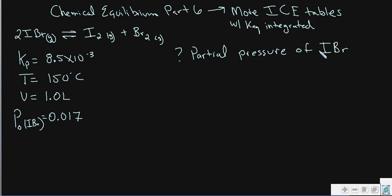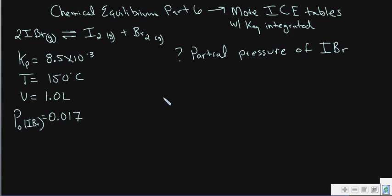To do this you have to use the Kp — the partial pressure equilibrium constant — along with an ICE table, so it gets a little bit more complicated. We're going to start with the ICE table because what we're given here is the initial concentration. We'll use the ICE table to figure out mathematically what the partial pressure at equilibrium will be, and then substitute that into the equilibrium constant expression.